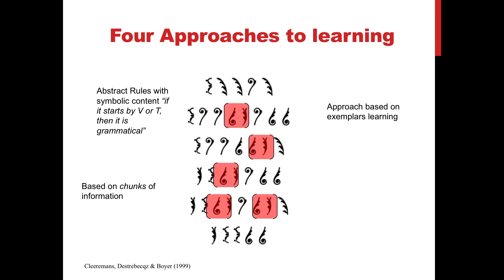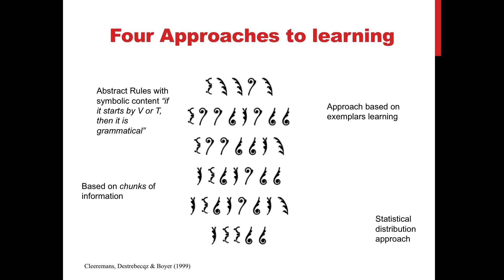The third approach is a more advanced version of exemplar learning. In this case, what we are doing when exposed to a new language is detecting chunks of information. Basically, we are very limited in our processing, so we can only pick up those that are more frequent. These frequent combinations of two letters are then what we use to decide between a grammatical and non-grammatical occurrence. When we get access to a new word or try to produce one, we use those chunks of information, precisely because of our processing limitations.